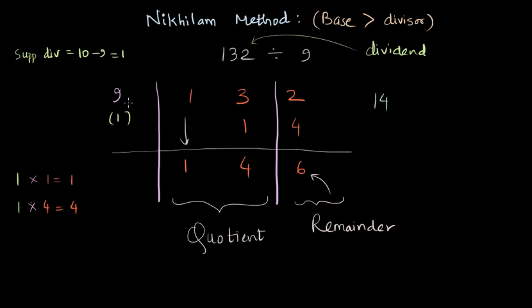If we multiply quotient by the divisor, which is nine, and then we add the remainder, we get 126 plus six, which is 132. And that equals the dividend. So our division here is correct.